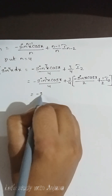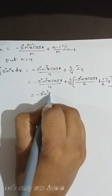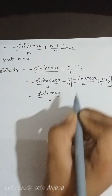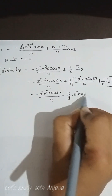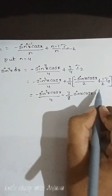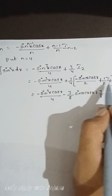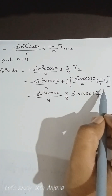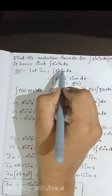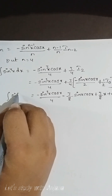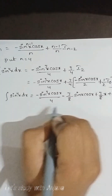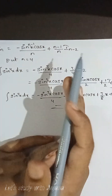That implies: −sin³(x)·cos(x)/4 + (3/4)·[−sin(x)·cos(x)/2 + (3/8)·I0]. Since anything to the power 0 is 1, I0 = ∫1 dx = x + c. Therefore, ∫sin⁴(x) dx = −sin³(x)·cos(x)/4 − (3/8)·sin(x)·cos(x) + (3/8)·x + c.